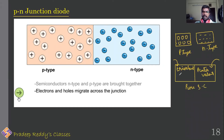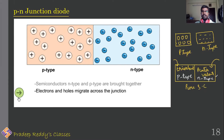The first half doped with trivalent impurities has majority charge carriers as holes, so it becomes a p-type extrinsic semiconductor. The second half doped with pentavalent impurities has majority charge carriers as electrons, so it becomes an n-type semiconductor. Together in one pure semiconductor, doping with trivalent and pentavalent impurities in separate sections forms a combination called a junction diode.